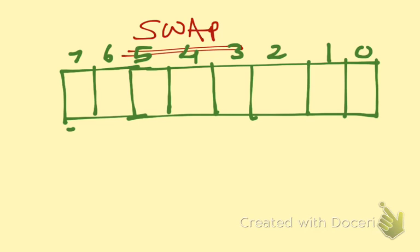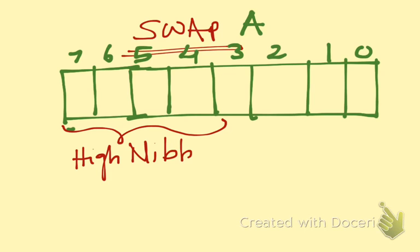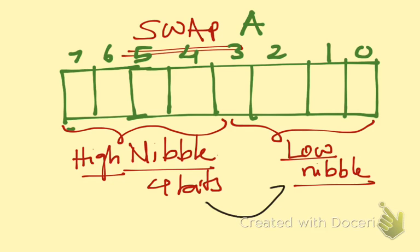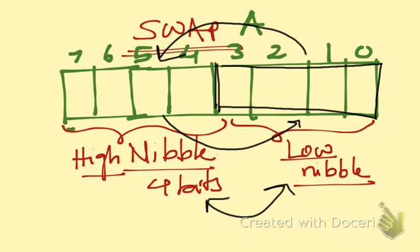When I'm using the command swap A, let me tell you this: bits seven through four are called the higher nibble, or the high nibble. A nibble is four bits, and a byte is two nibbles. Bits three through zero are the low nibble. When I say swap, the high nibble becomes the low nibble and the low nibble becomes the high nibble — all the bits are transferred in the same order.